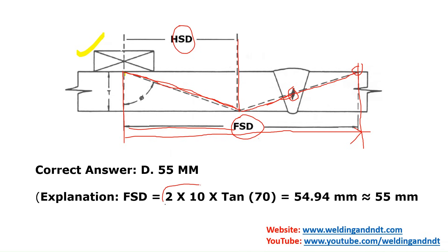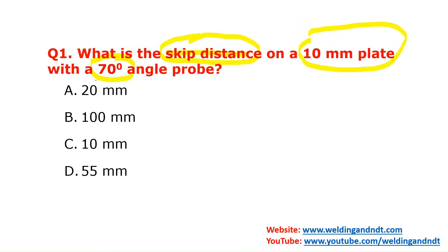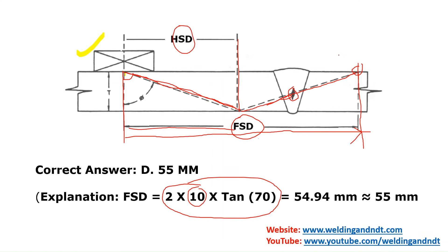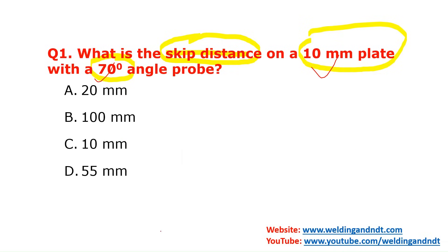The formula for calculating skip distance is: 2 × t × tan(θ), where t is the thickness of the material and θ is the probe angle. Here the angle probe is 70 degrees and the plate thickness is 10 mm, so: 2 × 10 × tan(70°) = 54.94 mm, which is approximately 55 mm. Option D, 55 mm, is the correct answer.